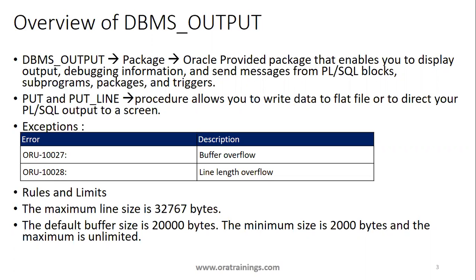One more thing: when you write a debug message, if the message content is too much, let's say if your message string reaches more than 32,767 bytes, it will give you another error. So the basic thing is we use PUT or PUT_LINE to capture logging information, but if your log content written in PUT_LINE is more than a particular length, it raises another exception.